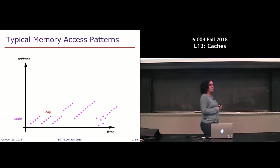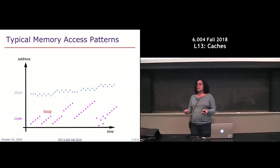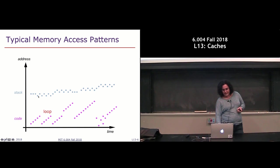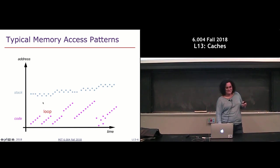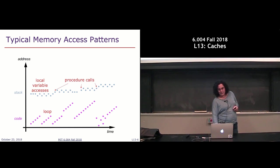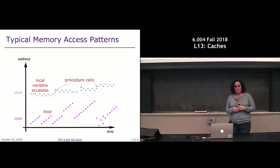One type of memory access we need to make is accessing our instructions. Another type is our stack, which we use to implement functions and store local variables. Within a procedure call, you're accessing a very small number of locations that are relatively close to each other, and you might be accessing them more than once in a short period of time — these correspond to our local variables. Every time we see a jump, it corresponds to a procedure call, creating a new stack frame for the next level of procedure.